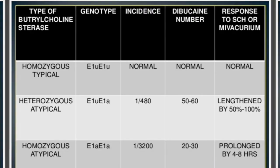If the Dibucaine number is 80 or more, meaning 80% or more of succinylcholine remains in the plasma unchanged — that is, not hydrolyzed by the plasma cholinesterase enzyme because dibucaine has inhibited the enzyme — the person has a normal plasma cholinesterase enzyme, that is, the wild-type homozygote, the typical enzyme.